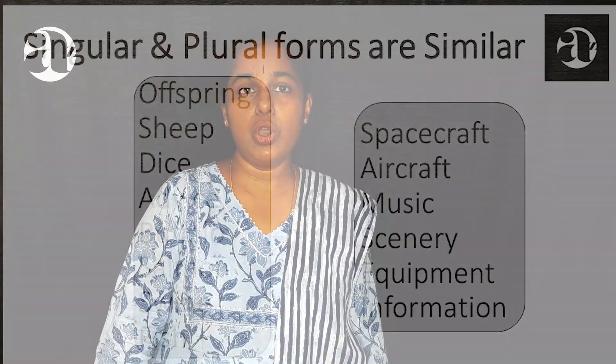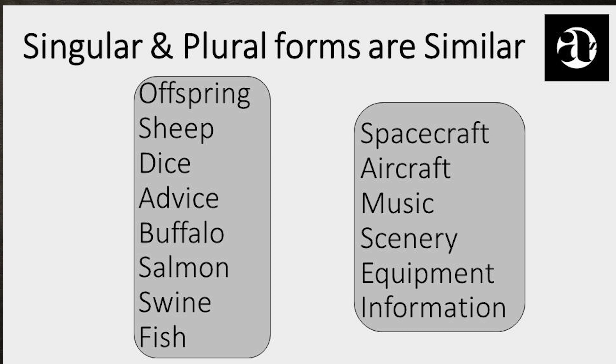We may also have to remember that the singular and the plural form remains the same for a few other nouns as well: offspring, sheep, dice, advice, buffalo, salmon, swine, fish. The same norm applies to nouns such as spacecraft, aircraft, music, scenery, information, equipment, etc. The singular and the plural forms are the same.